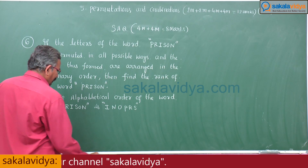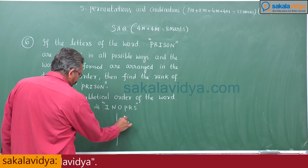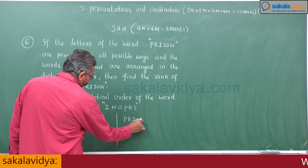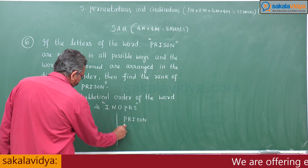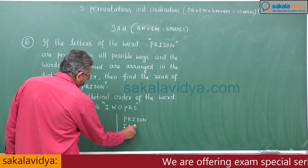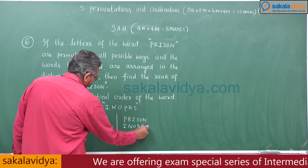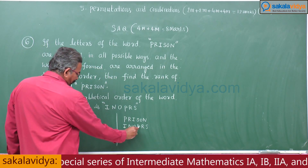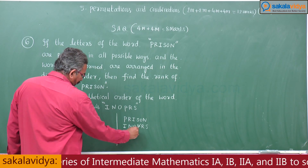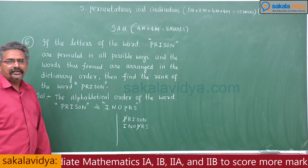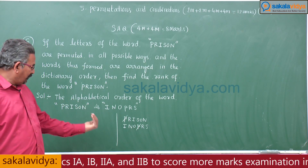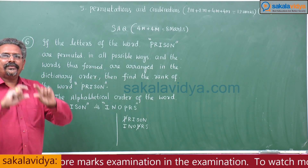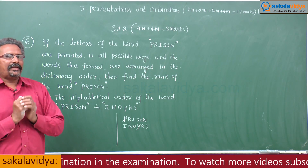Now, writing PRISON in alphabetical order: I, N, O, P, R, S. PRISON is required. That means P and P get cancelled. So before P, the letters that appear are I, N, O.